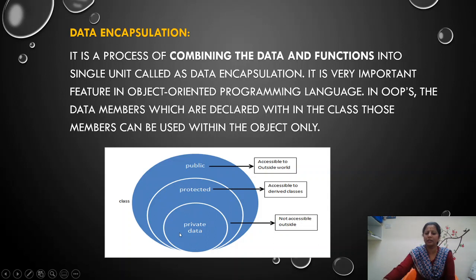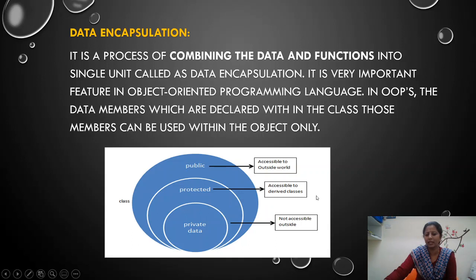Encapsulation means combining the data and functions together into a single unit. Those data have their own properties. Private data — no one can access. Protected data — only that particular class and derived class can access; outside data cannot be accessed. Public — the data can be accessed outside the class also.